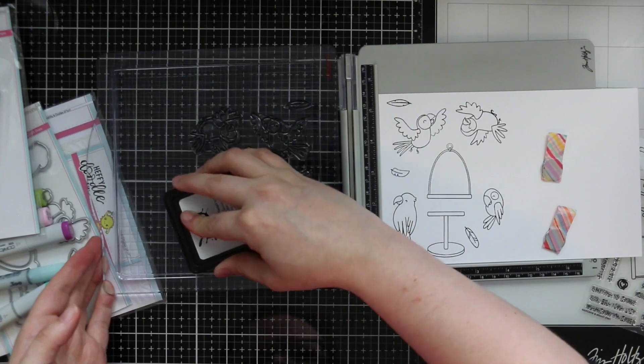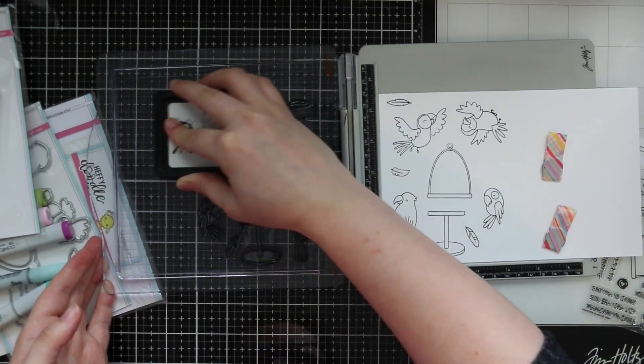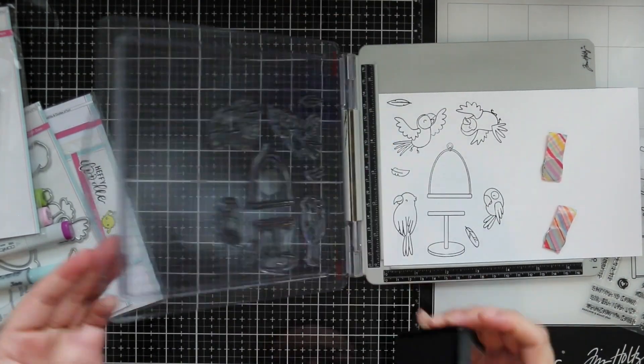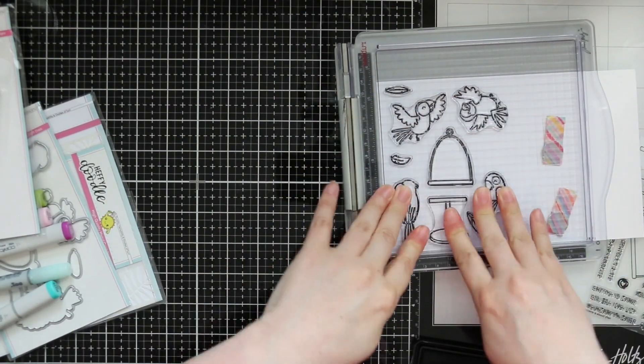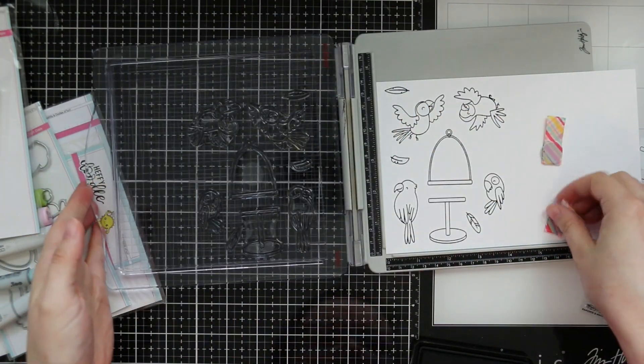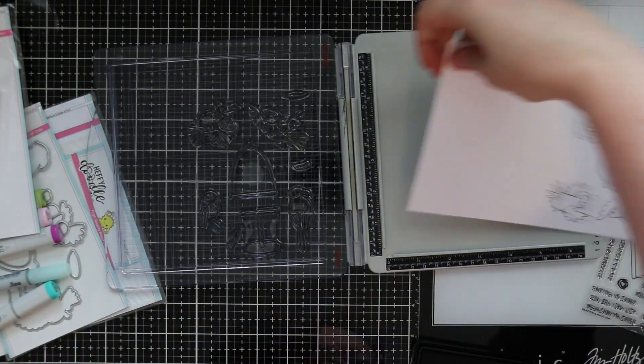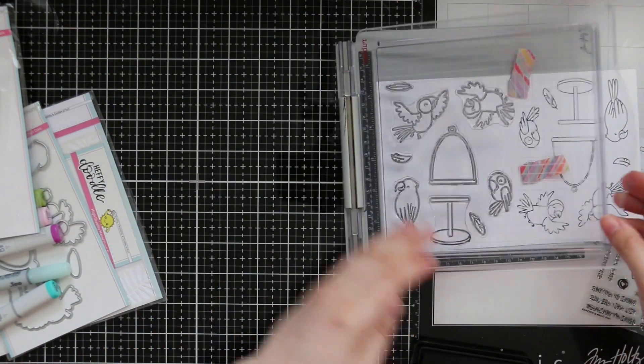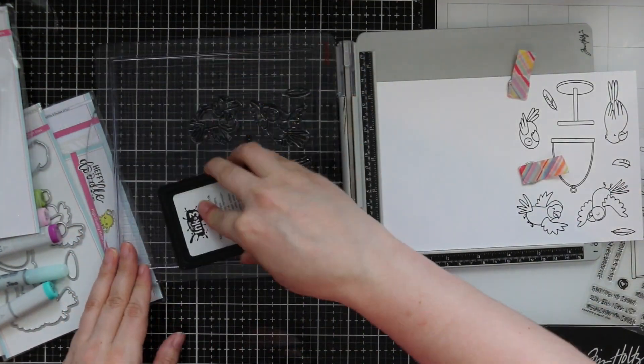When I was doing that I realized that this piece of cardstock is big enough that I can just flip it around and get twice the images. So why not make more cards while I'm at it. I flipped that cardstock around and then just inked up the stamps again and stamped them on the other side.